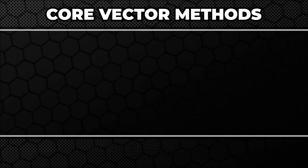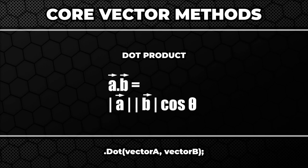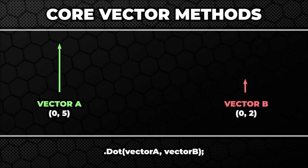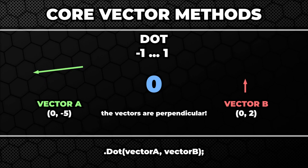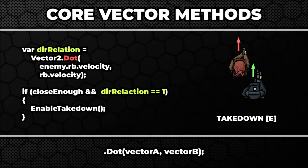The next very useful method is Dot. It returns something called the dot product. The theory behind calculating the value is a little bit complex, but you shouldn't ever need it. The only important thing to know is that it returns a relation between two vectors' directions — a value between 1 and minus 1. If it returns 1, the two vectors are pointing in exactly the same direction. If it returns minus 1, the vectors are exactly opposite. The most interesting value it can return is 0, meaning the two vectors are perpendicular to each other. A common use case would be checking if two game objects are traveling in the same direction.